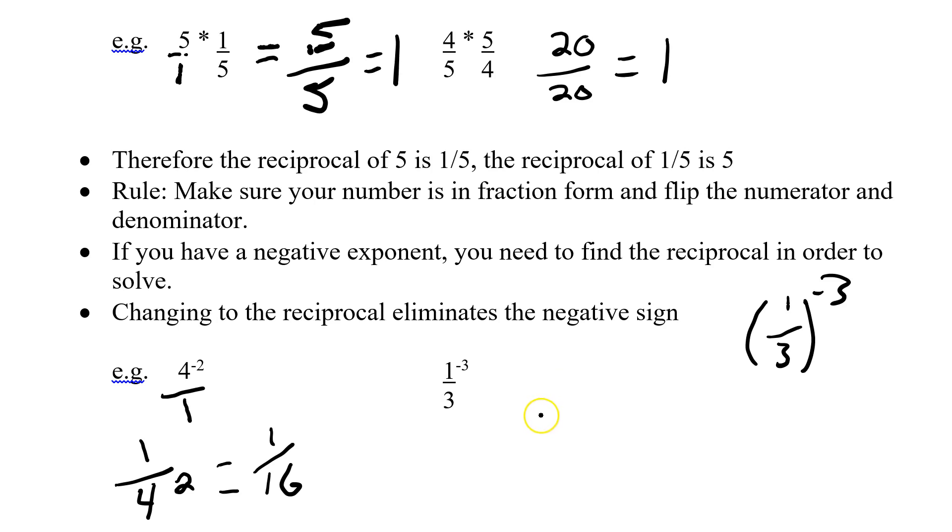So I've got to get rid of the negative part of the exponent. So I'm going to do the reciprocal. So that becomes 3 over 1 to the third. And again, I can work out 1 cubed, 1 times 1 times 1, which is 3 over 1. And of course here, I don't have to have the 1, so it just becomes 3.